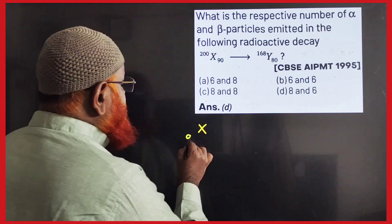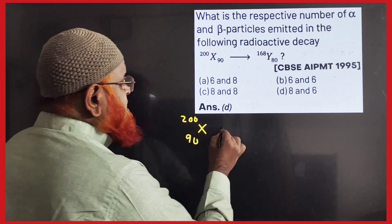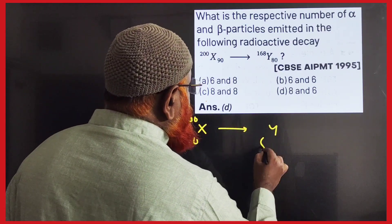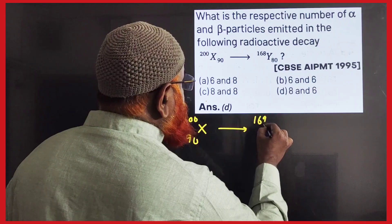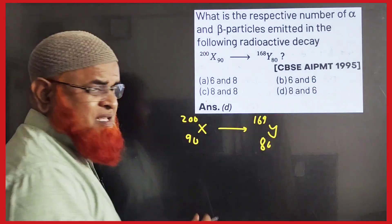You can just say X with atomic number 90 and mass number 200 gives rise to Y with atomic number 80 and mass number 168. Let us take here